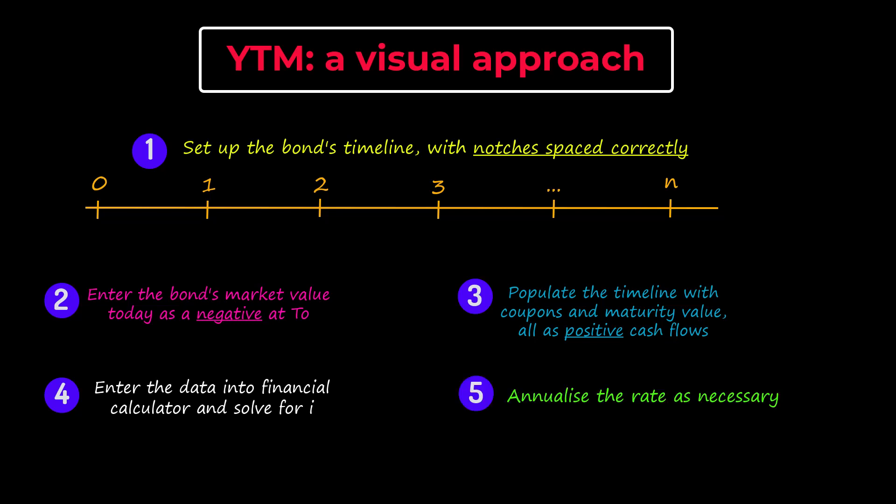The last step is to annualize the result of your calculation. If the bond is semi-annual pay, you double your calculator result to obtain the annual cost of debt. If it is quarterly pay, multiply the result by 4. It is only for an annual pay bond that no further adjustment is needed.